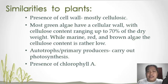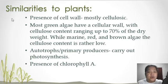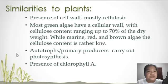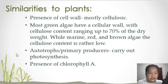Algae could also be linked to the plant kingdom because of the presence of a cell wall that may contain mostly cellulose — most green algae have a cell wall — and the process of producing their own food. So they are autotrophs that carry out photosynthesis, and they contain chlorophyll A, which is also found in the plant kingdom.